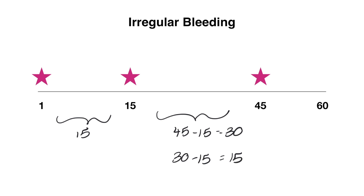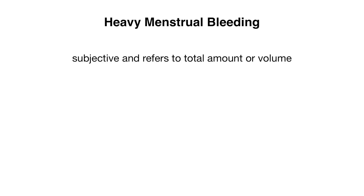The final term we're going over is heavy menstrual bleeding. This is very subjective and usually refers to the total volume of bleeding occurring with each cycle. Most patients know what is normal for them in terms of heavy versus lighter bleeding days. If they express concern that their bleeding has become heavier, this should be evaluated further, particularly if it's starting to affect their quality of life.